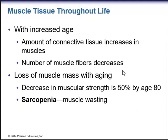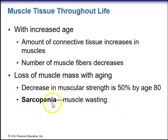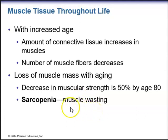With aging, there is a loss of muscle mass — a decrease in muscle strength of about 50% by age 80. The condition known as sarcopenia refers to this muscle wasting. That concludes chapter 10 on skeletal muscle.